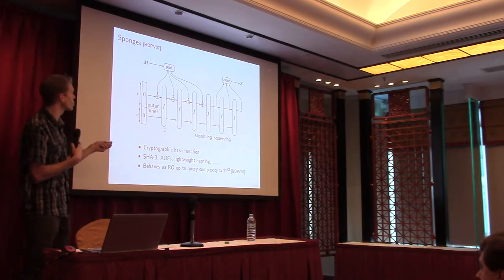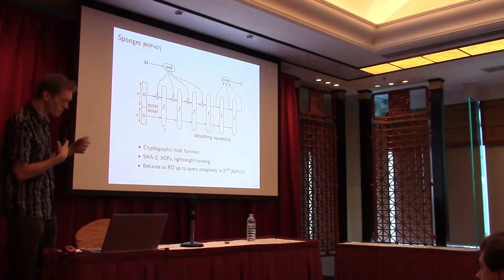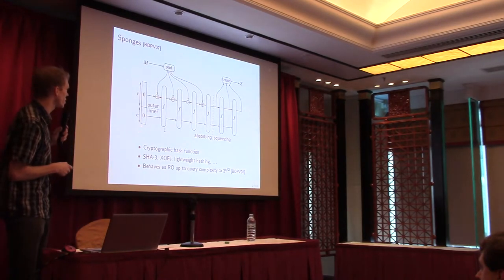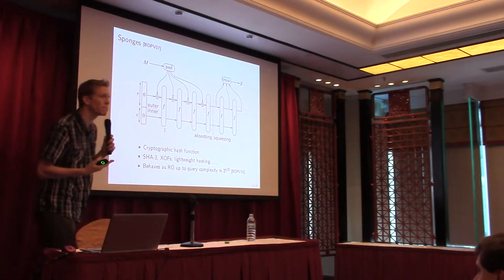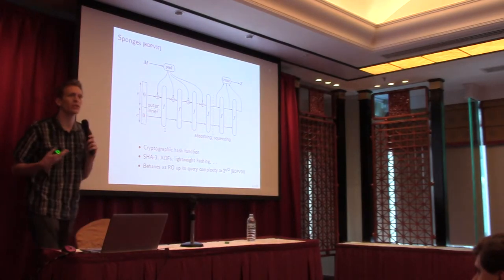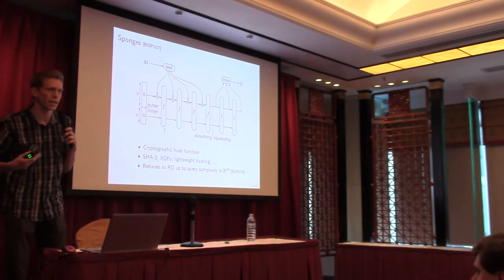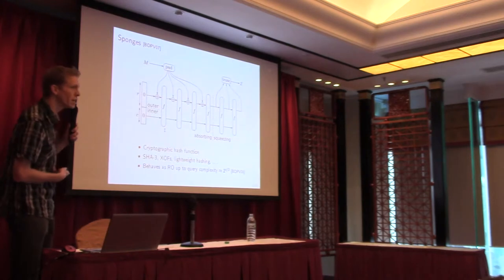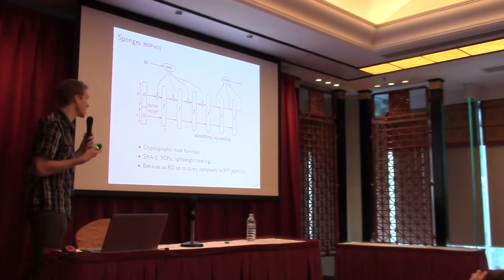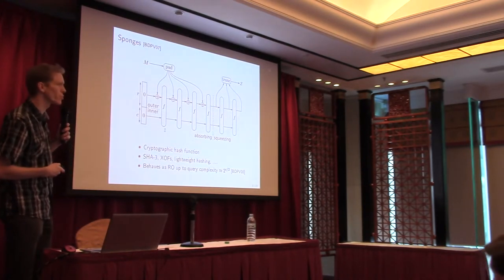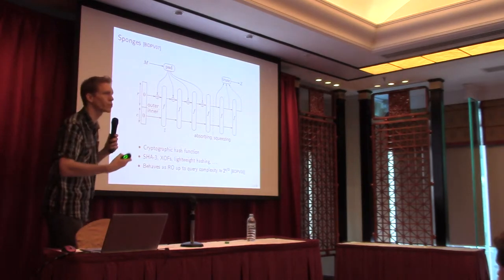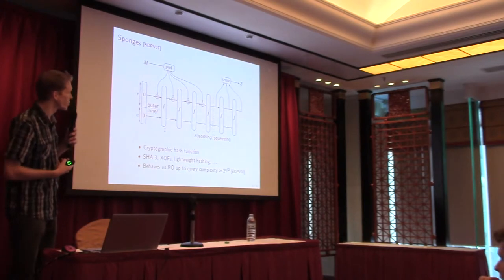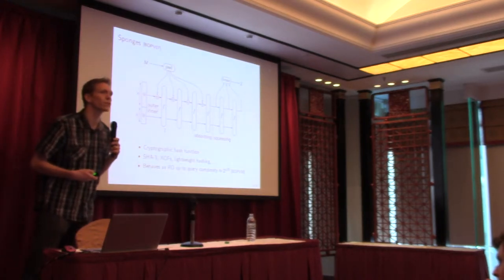The output is squeezed from the outer part. The inner part is left untouched. This C-bit state ensures the security of the design. Barth Manning et al. proved that if the permutation is assumed to be ideal, the sponge function behaves like a random oracle up to 2 to the C over 2. So if an attacker cannot make more than 2 to the C over 2 evaluations, it achieves security.